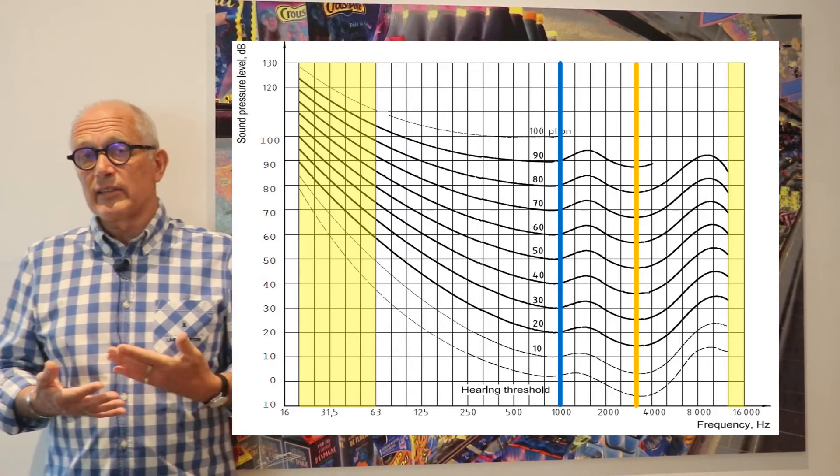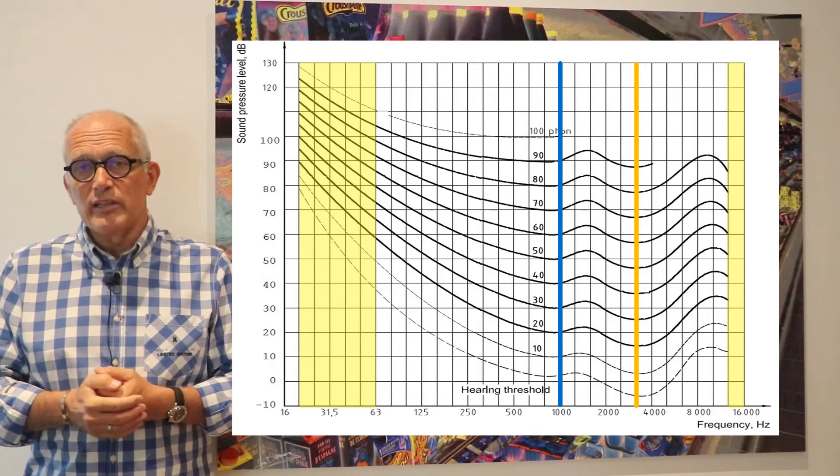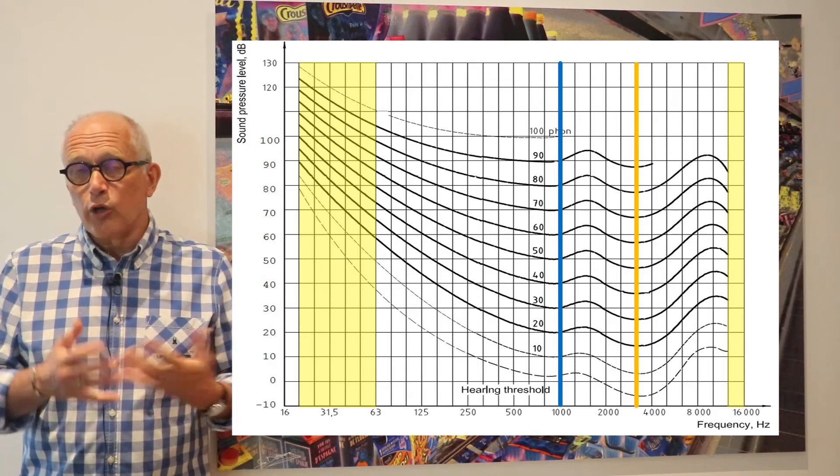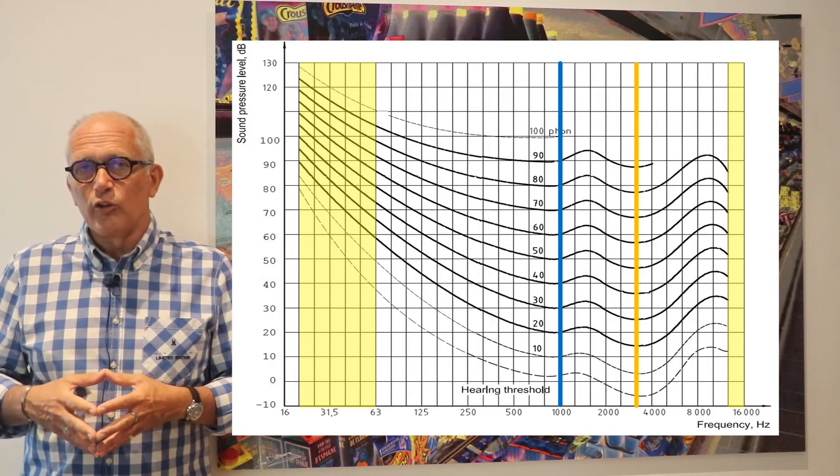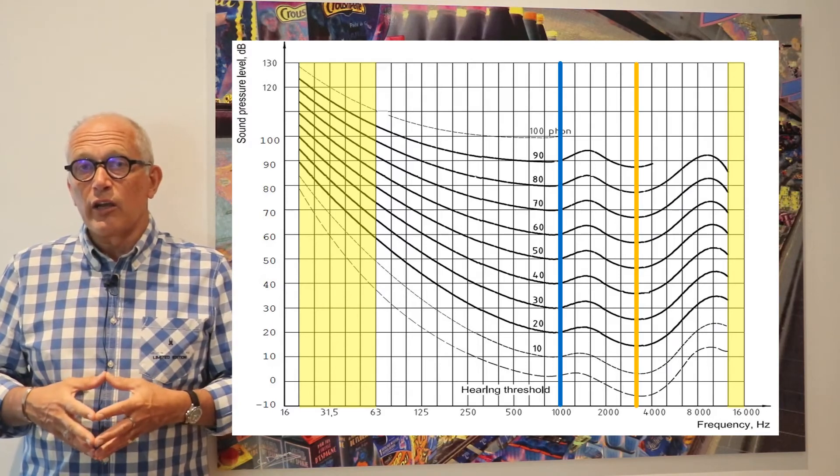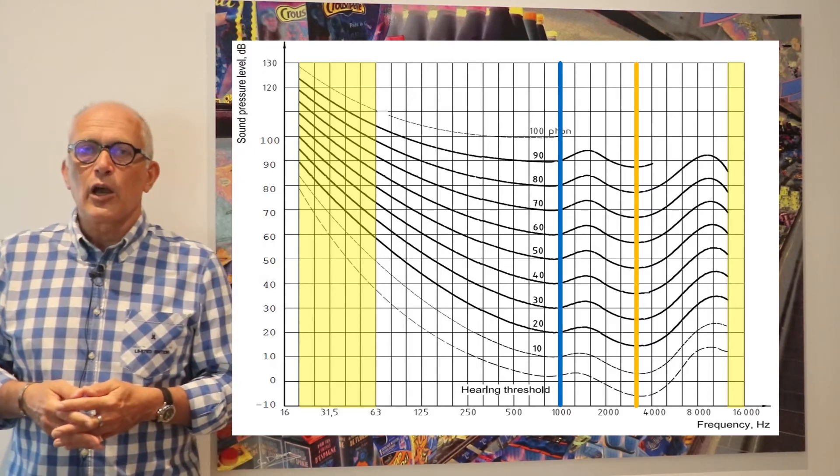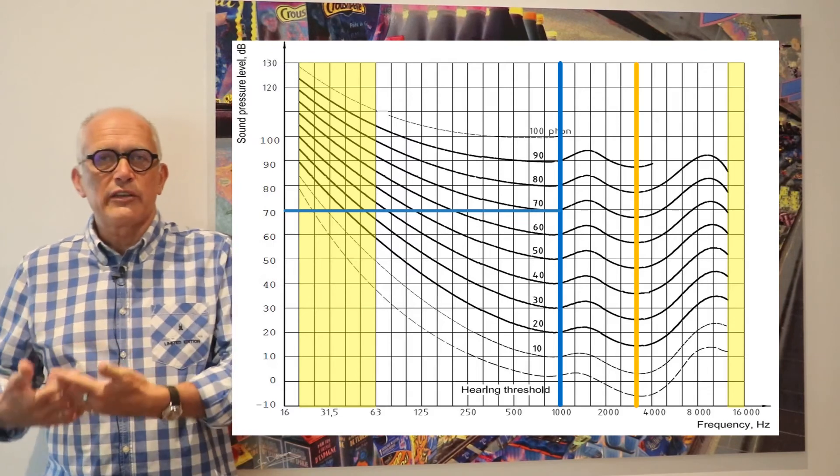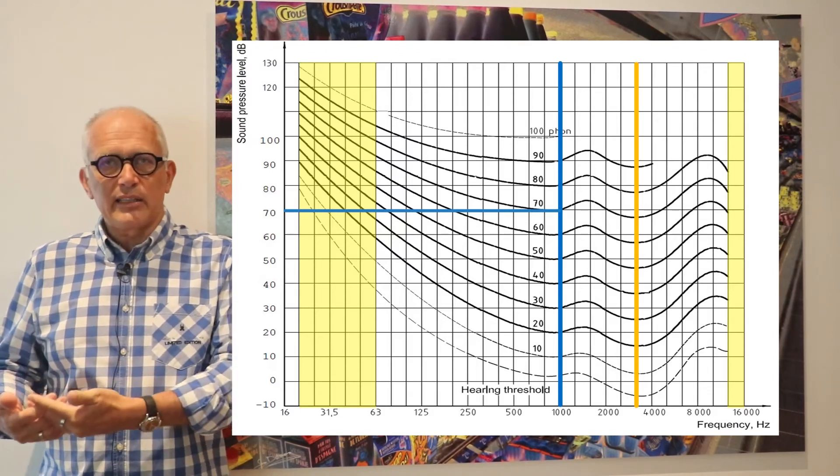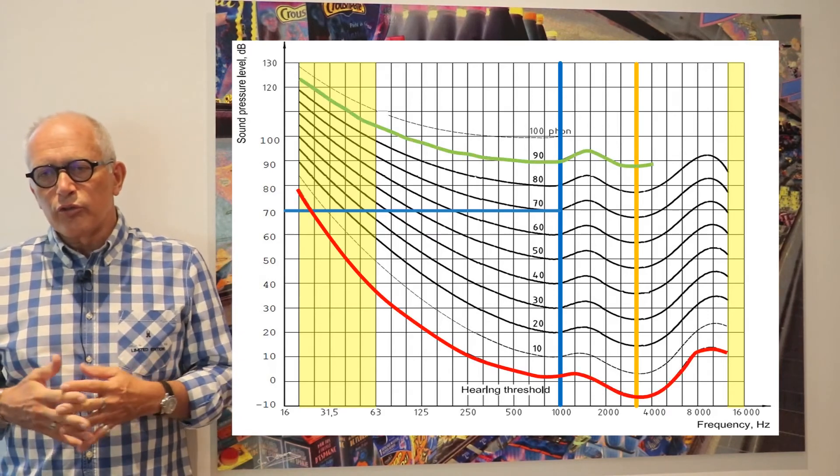You also obviously notice that the loudness measured in phones is equal to the sound pressure level at one kilohertz by definition, because that's what we have chosen as reference. So a level of 70 phones and 70 decibels mean exactly the same thing at one kilohertz.